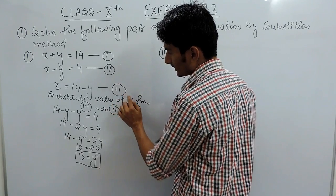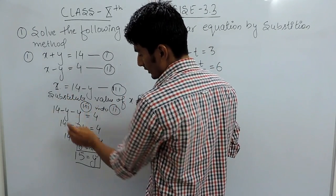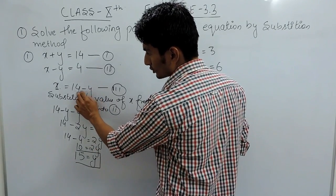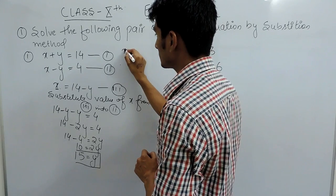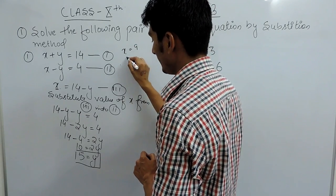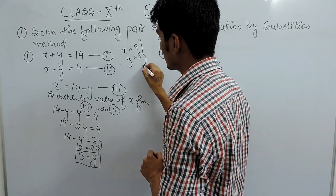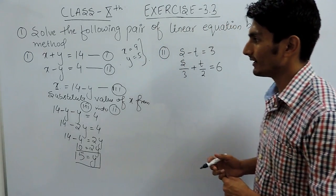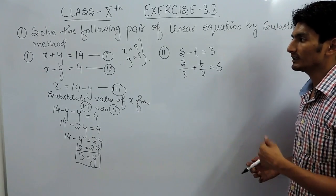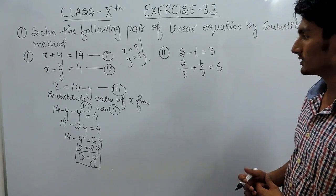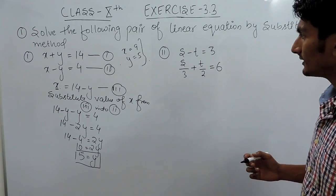We substitute y equals 5 into equation three to find x. The value of x is 9 and the value of y is 5. So these are the values of x and y, and this is the substitution method. Now let's solve the second part.